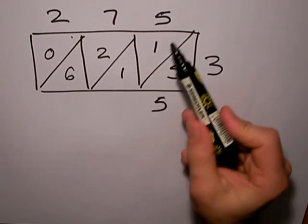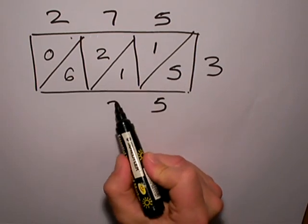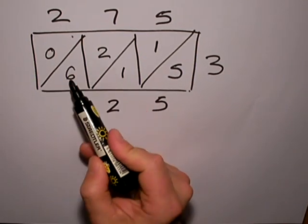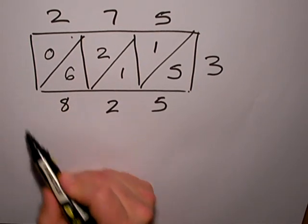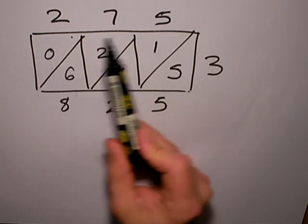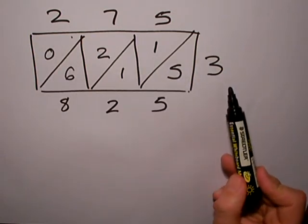So my first number is 5, the 1 and the 1 are in diagonal so that's 2, and the 6 and the 2 is 8. There's nothing around the corner so I can leave that as it is. 275 multiplied by 3 is 825.